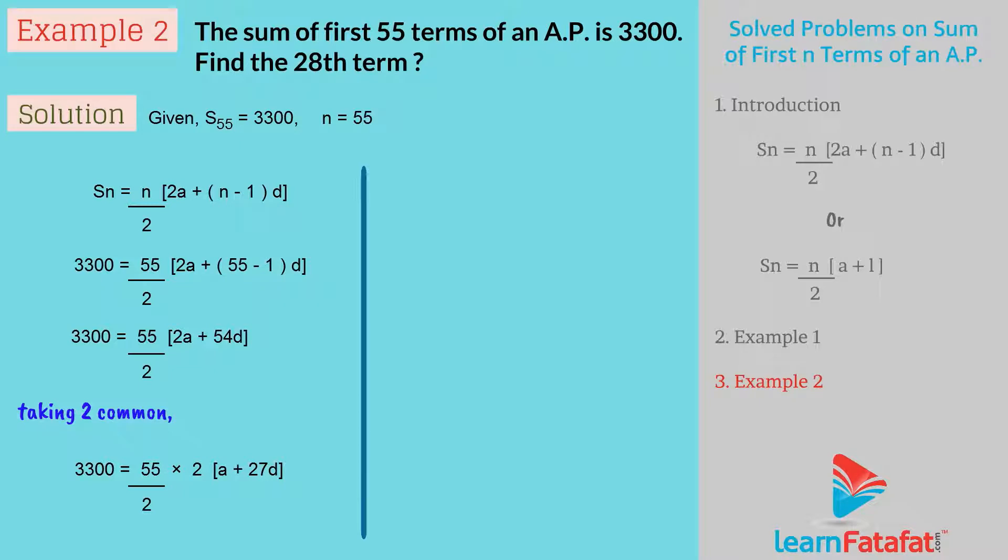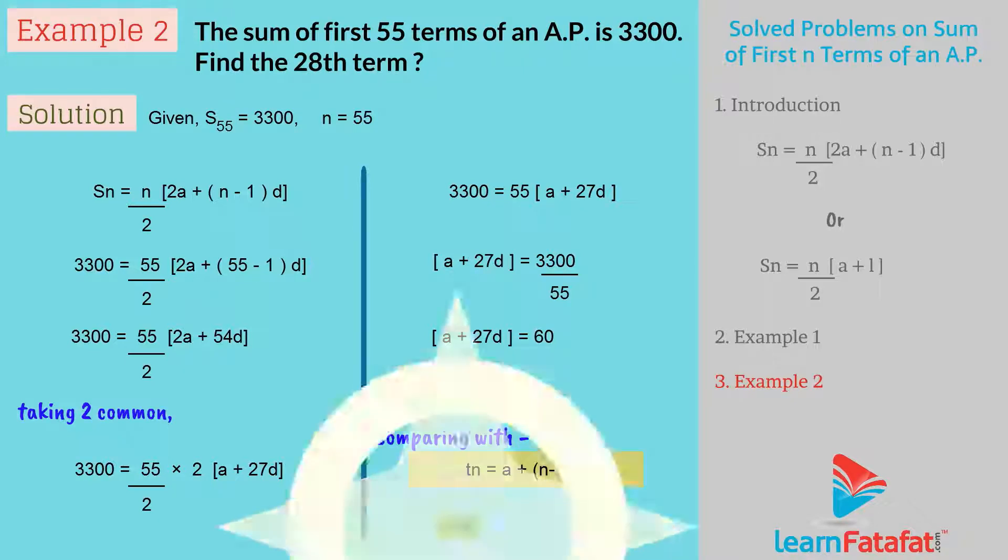3300 equals 55 into a plus 27d. Dividing, a plus 27d equals 3300 upon 55, which equals 60. So a plus 28 minus 1 into d equals 60. Comparing this equation with Tn equals a plus n minus 1 into d, we get n equals 28 and the 28th term T28 equals 60.